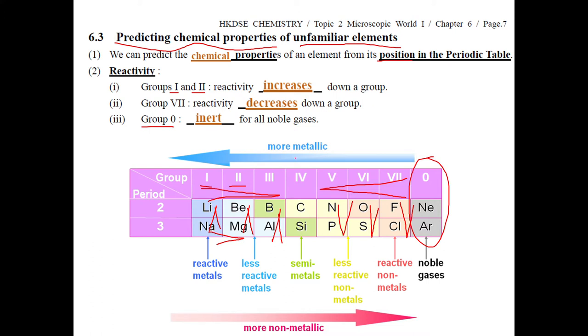And also, from this diagram, you find for the left-hand side, it is more metallic. Sometimes, we use metallic or metallic character. You find for more reactive metal, we say more metallic. For the non-metal, from Group 5, 6, 7, and 0, you find it is more non-metallic. So from more metallic to this side is non-metallic, so two extremes.